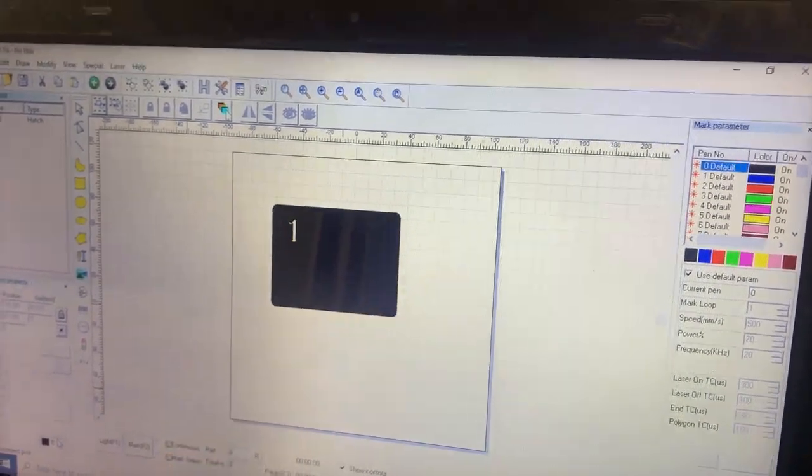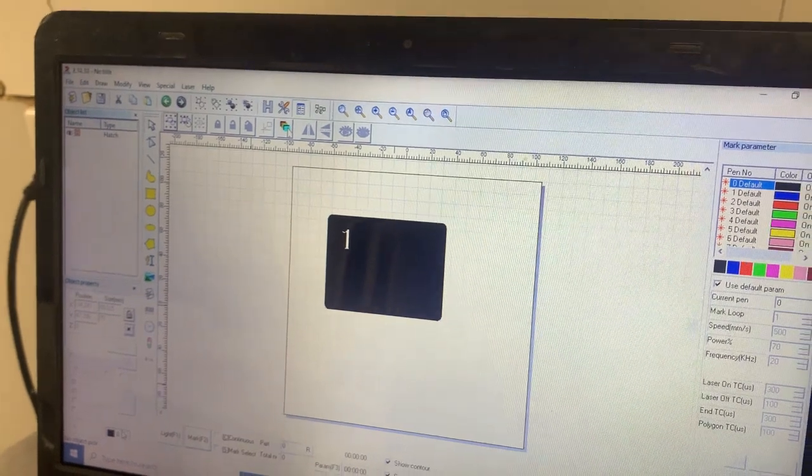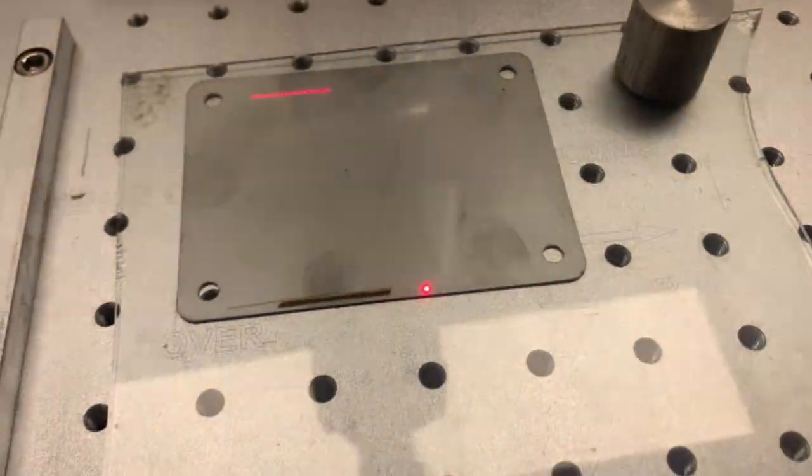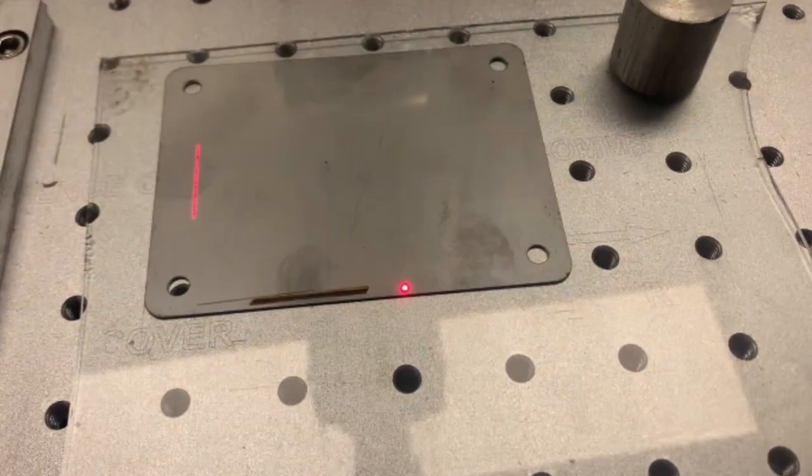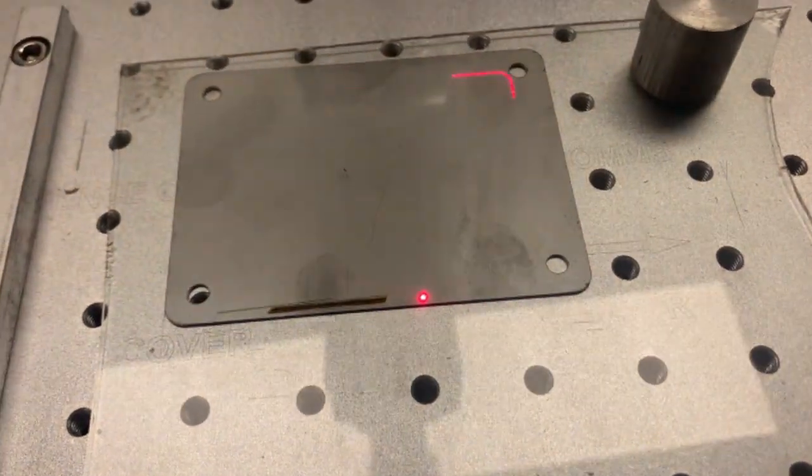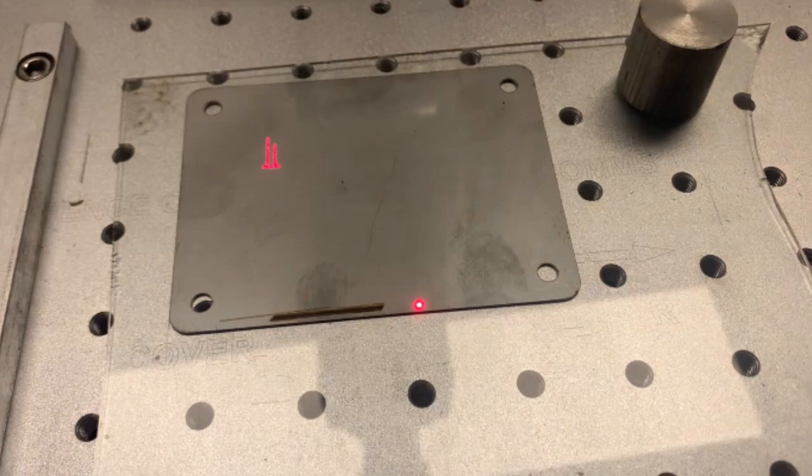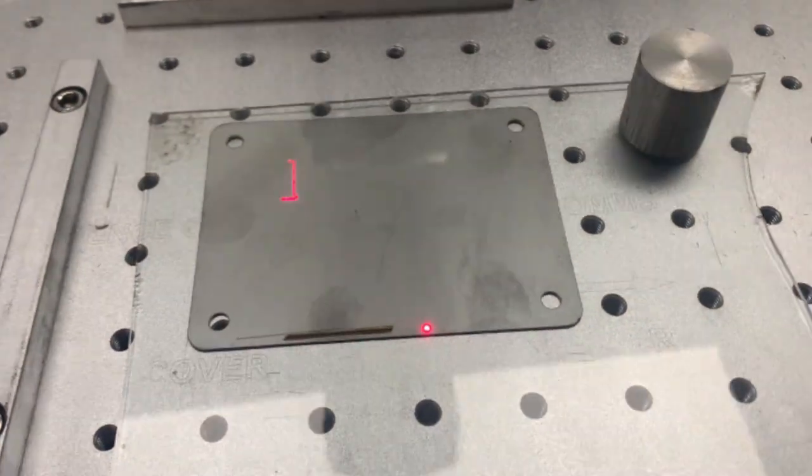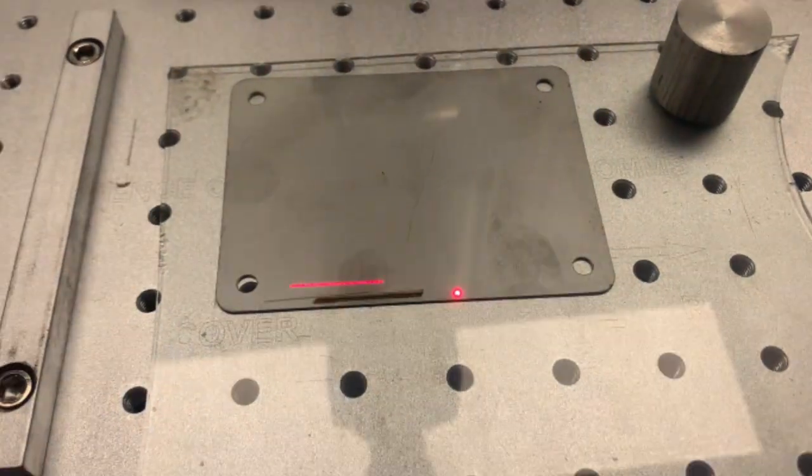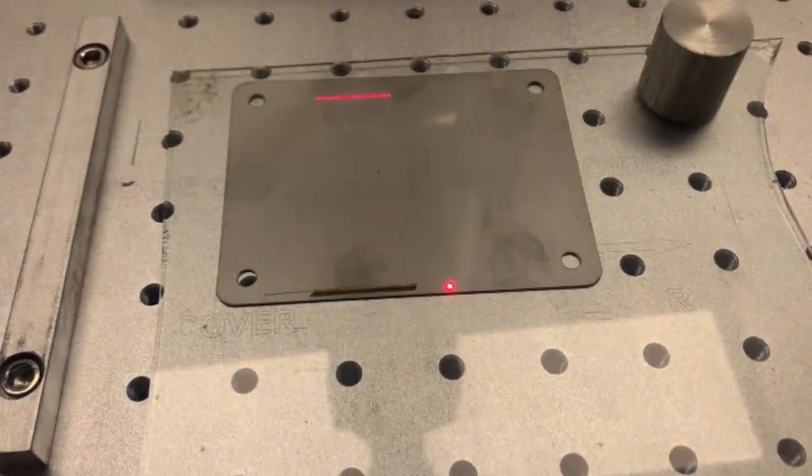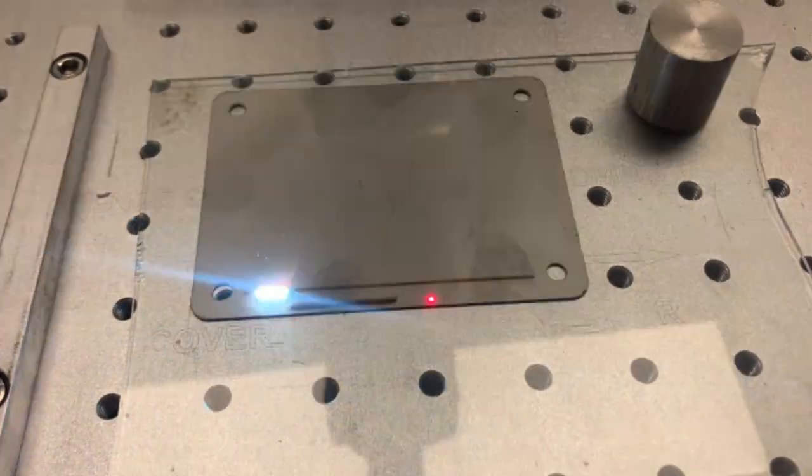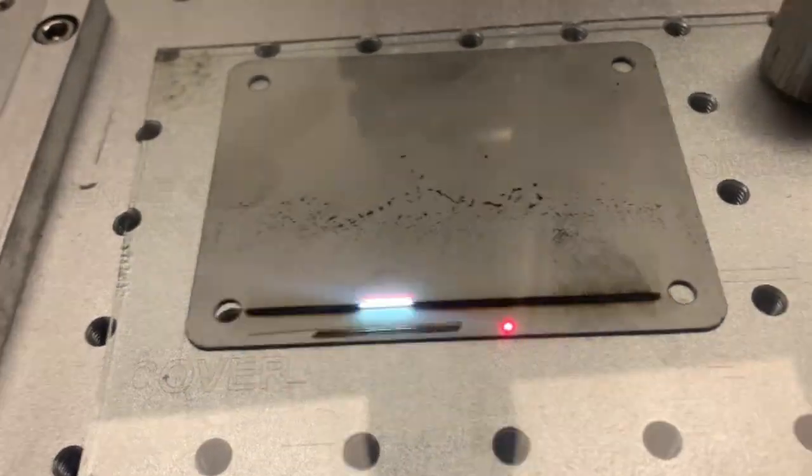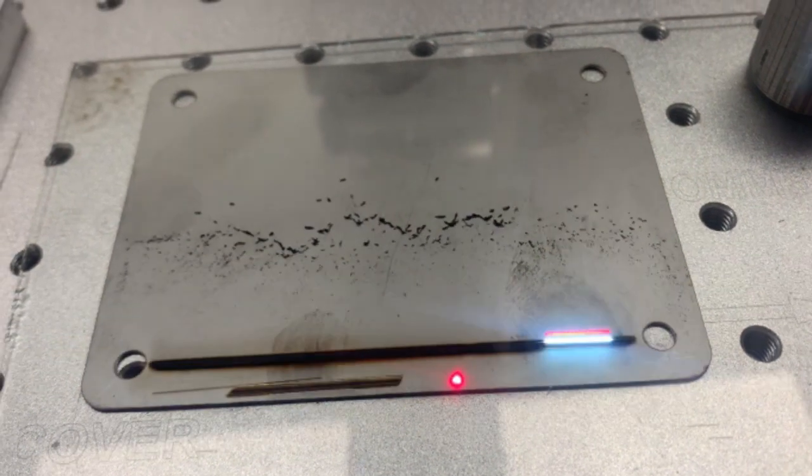I've got my piece of stainless steel under the glass and the laser's focused on the surface of the stainless steel. We're ready to shoot the first one. You can see that number one in the corner. Let's see what happens.